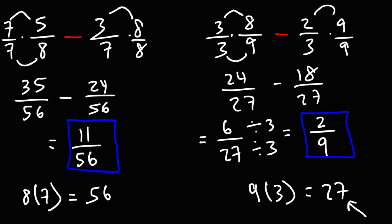So that is how you can add and subtract fractions with unlike denominators. You need to make sure to get the common denominator. If you get the least common denominator, you won't have to simplify your final answer. But if you use a general common denominator that is not the LCD, then you may have to simplify your final answer. So just keep that in mind. Thanks for watching.